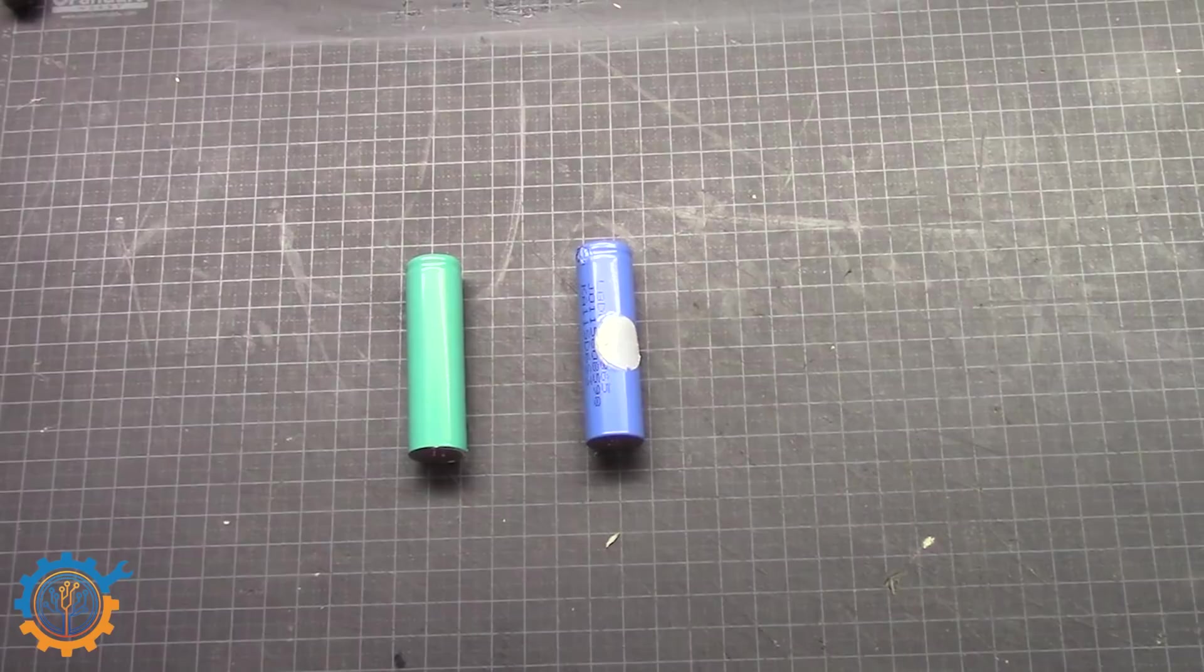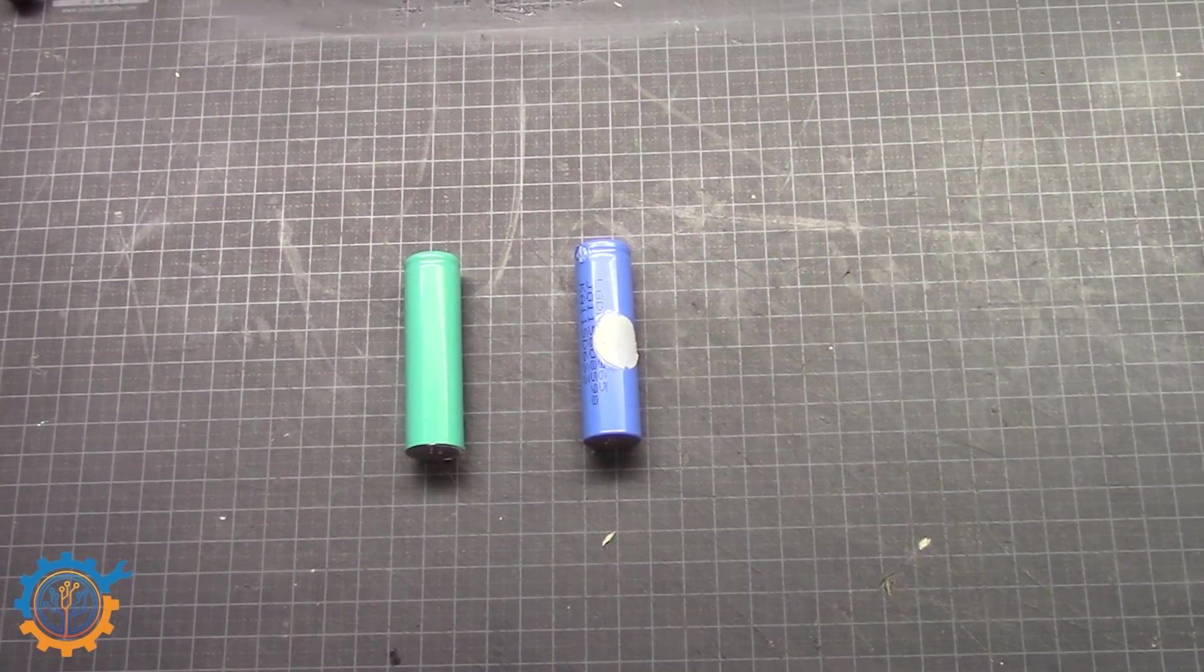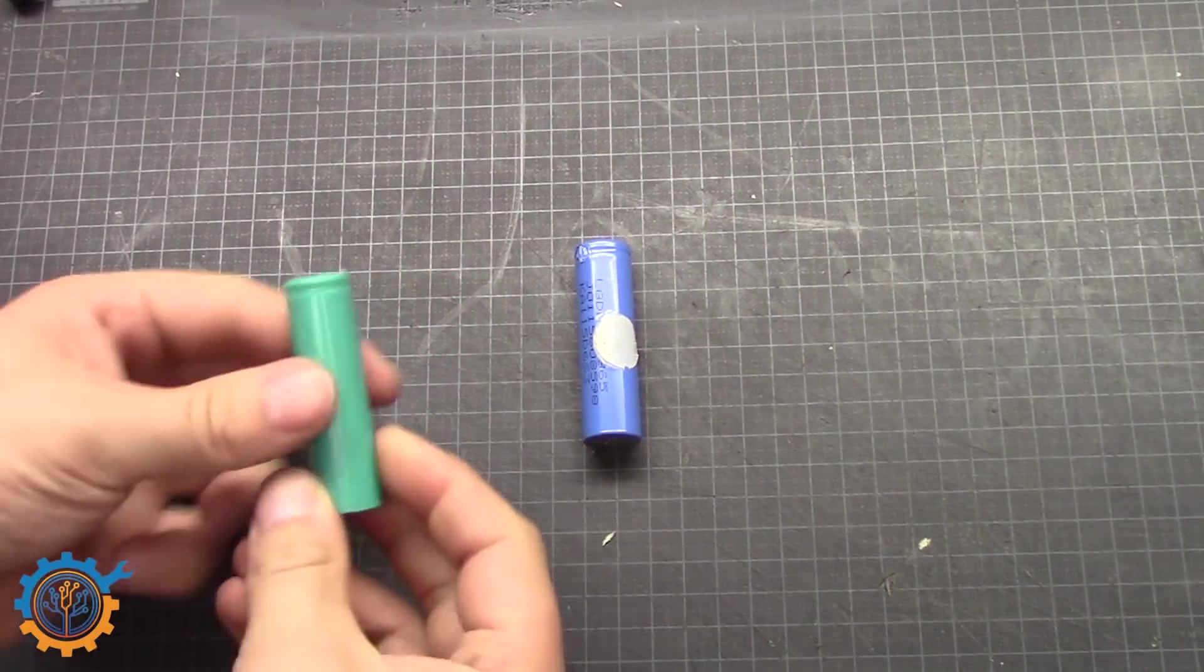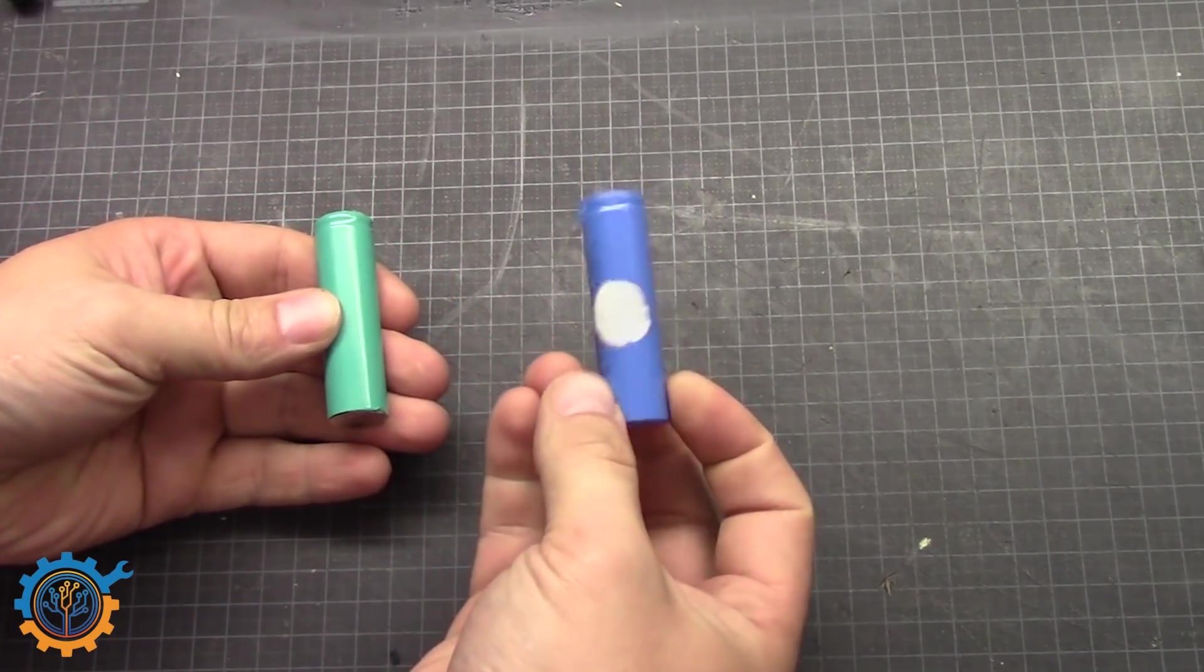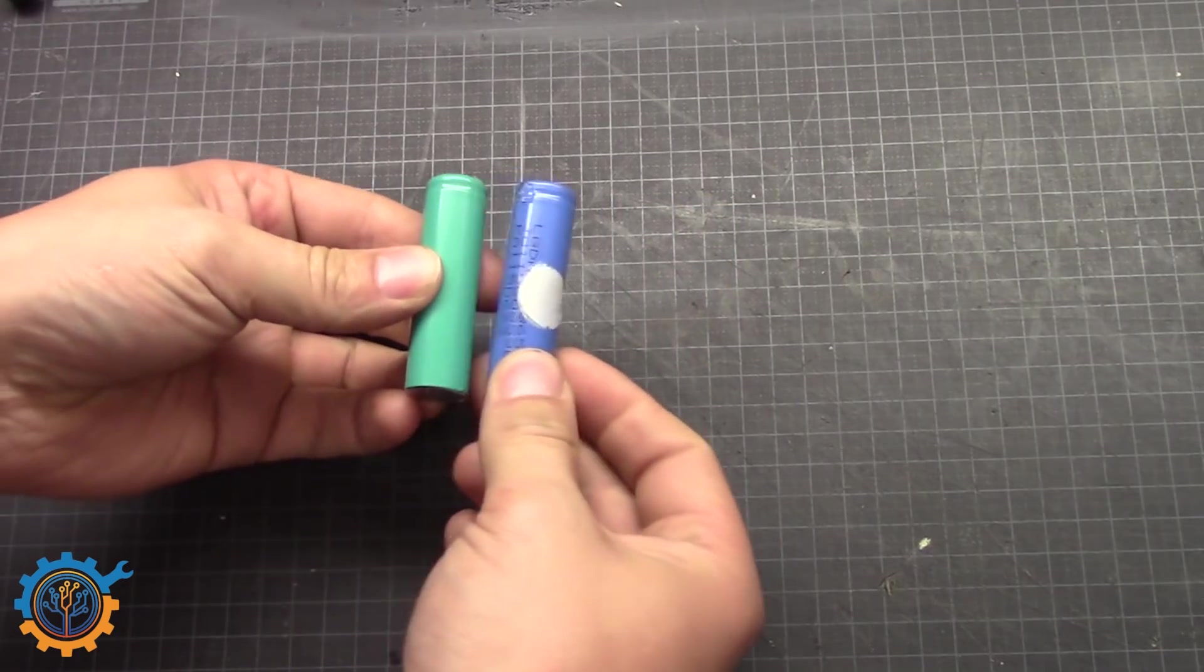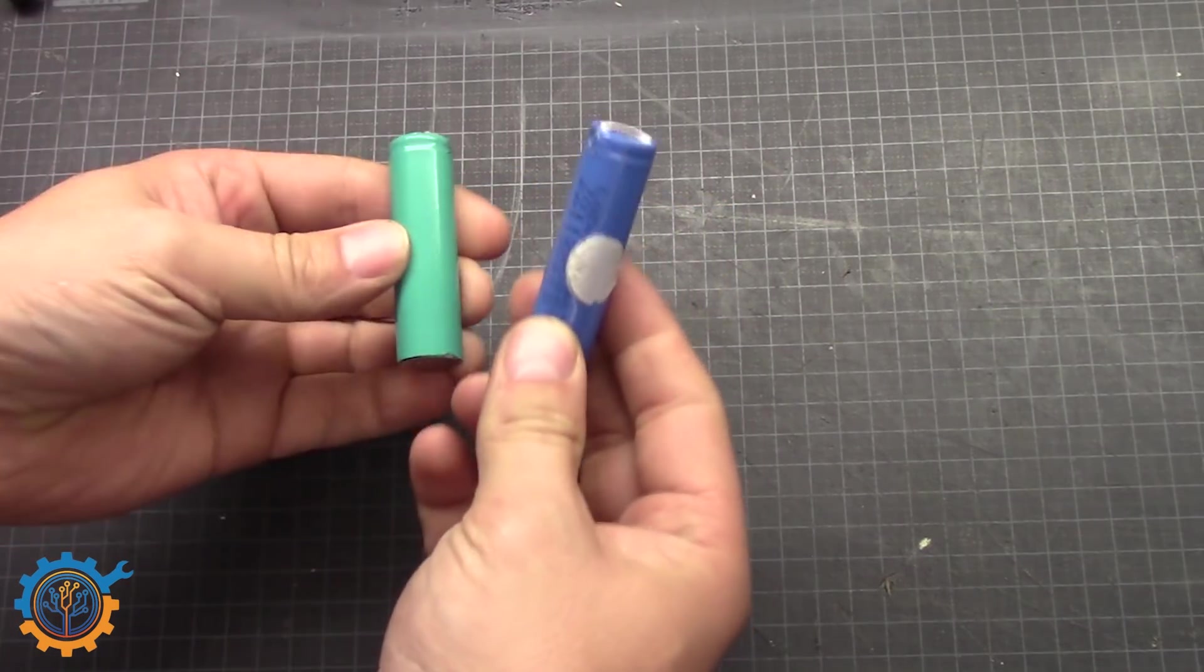But what about bump charging a cell from one to another? For instance this green one here that is fully charged. And this one that is below 1V. What if we just put them in parallel? No, that's not good at all.